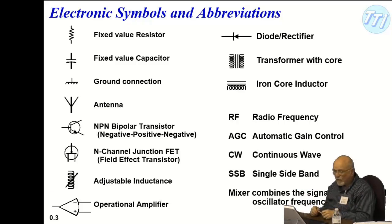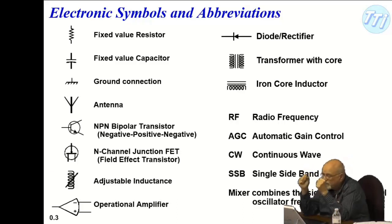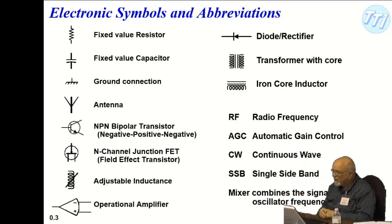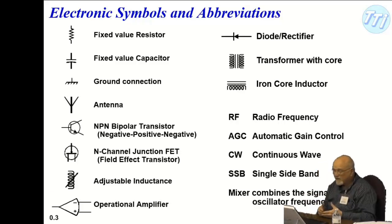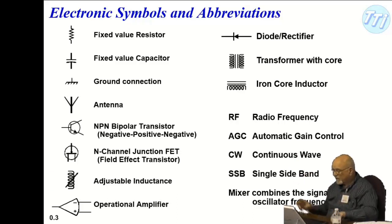RF, AGC — automatic gain control — is a circuit we'll go over in more detail. CW is continuous wave. SSB is single sideband. Remember when I told you that you mixed two signals together — what did you end up getting? The sum and the difference. The sum is considered a sideband, and the difference is considered a sideband. Which one you go after just depends on the filter you're working with. In a radio, you want to keep as low a frequency as you can because there's less radiation interference. The mixer is a general term where it combines the signal with the local oscillator frequency, creating two new frequencies.